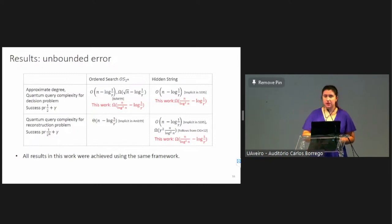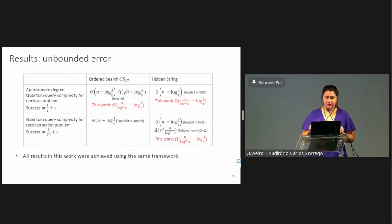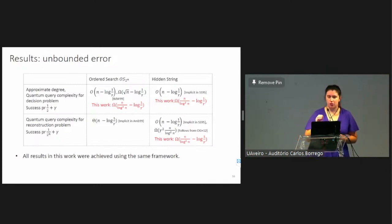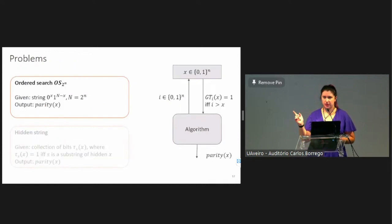Something we want to emphasize is that all of the results in this work were achieved using the same framework, using the same technique. To give you a glimpse of this framework, we're going to focus on understanding the approximate degree of ordered search for the bounded error setting. Just a reminder: ordered search is an abstraction of binary search. The input starts with zeros and ends with ones, and the goal is to find the parity of the location where the string splits.